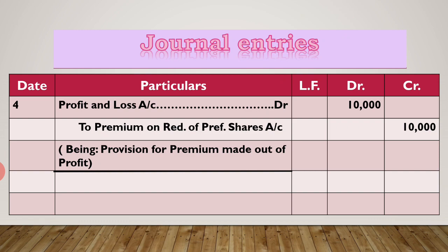Entry number 4: profit and loss account debit to premium on redemption of preference share, 10,000 — premium write-off entry. In these questions, no old share premium was available and no new share premium was given. So the first chance for share premium cannot be used. Therefore we write off the premium against profit and loss account. Profit and loss account debit to premium on redemption of preference share account, 10,000. Being: provisions for premium made out of profit.